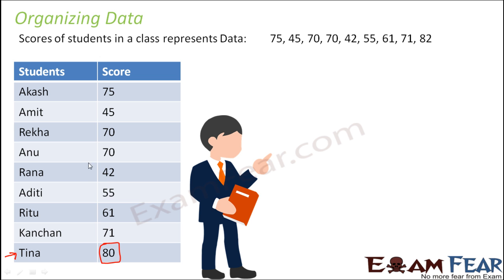And who scored minimum? Looking at this, you see that 42 is the minimum score, and Rana scored minimum. This is one way of organizing the data — you put it into a table, and the moment you do that, it becomes easier to compare the numbers.